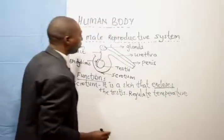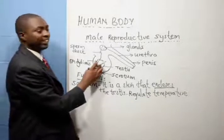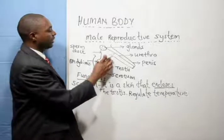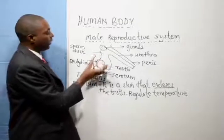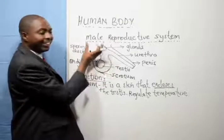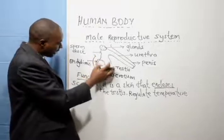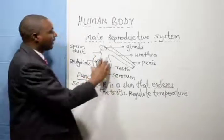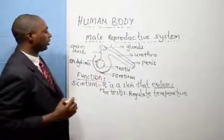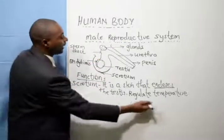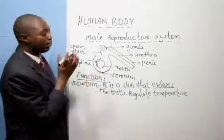For proper sperm production, because sperm are produced in the testis, they need a slightly lower temperature than the human body. That's why the testis are not found inside the body — they are found outside the body, suspended in the scrotum, so that they can be at a lower temperature than the body temperature. So the scrotum regulates temperature by being away from the normal body.